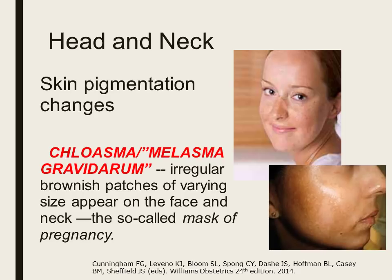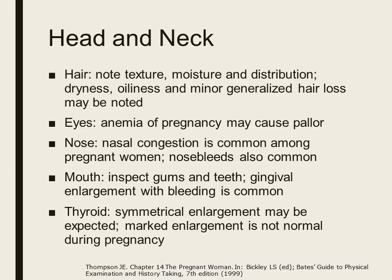For examination of the head and neck, note skin pigmentation changes. You might note chloasma or melasma gravidarum — irregular brownish patches of varying size that appear on the face and neck, known as the mask of pregnancy. For hair, note the texture, moisture, and distribution — whether dry or oily, or if there is minor generalized hair loss, which may be expected. Inspect the eyes for signs of pallor, which may be secondary to anemia of pregnancy. Note nasal congestion or nosebleeding, which are common. Inspect the gums and teeth for gingival enlargement with bleeding.